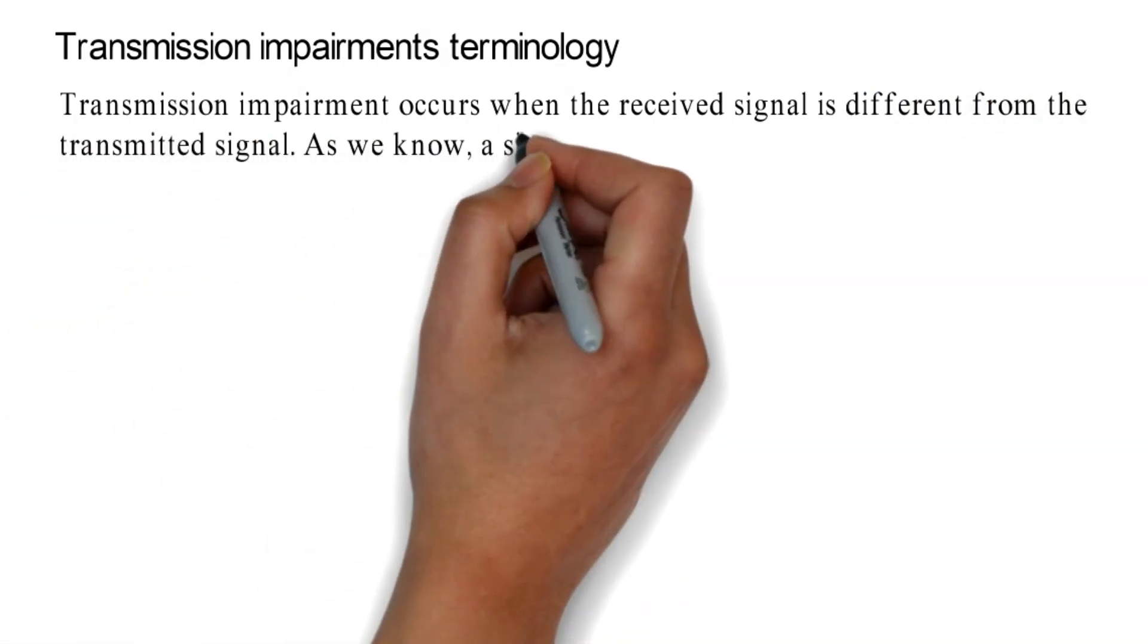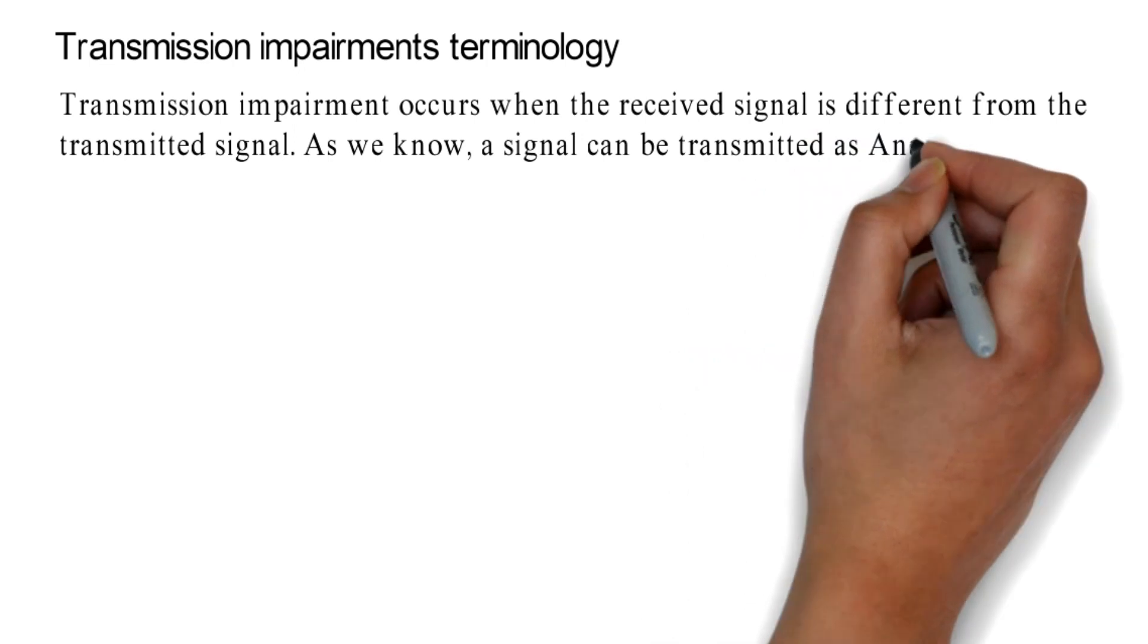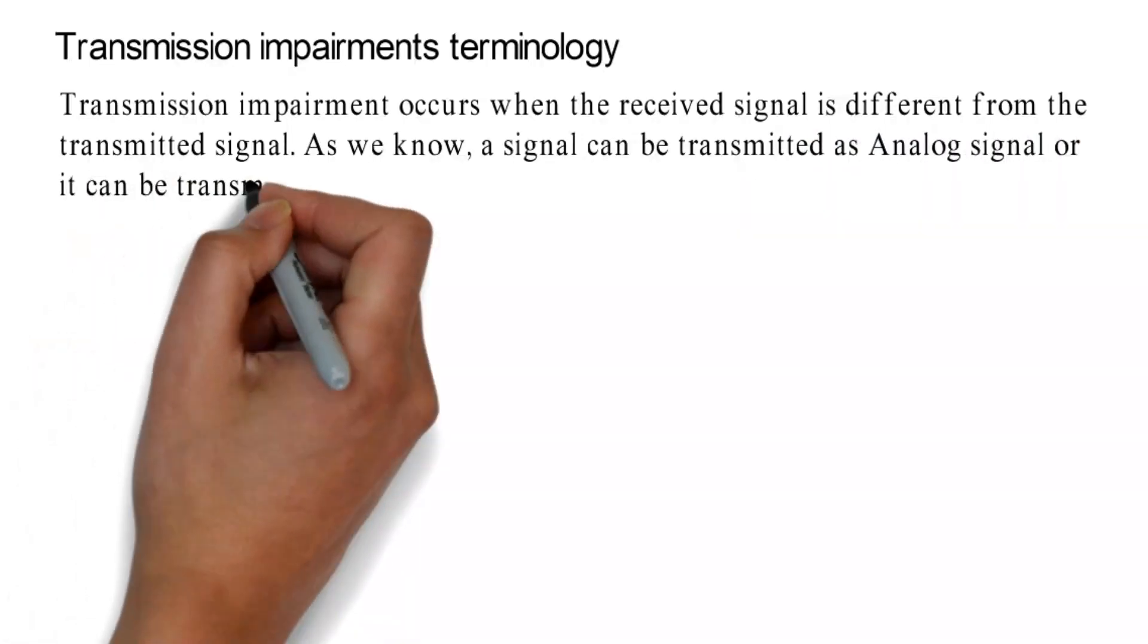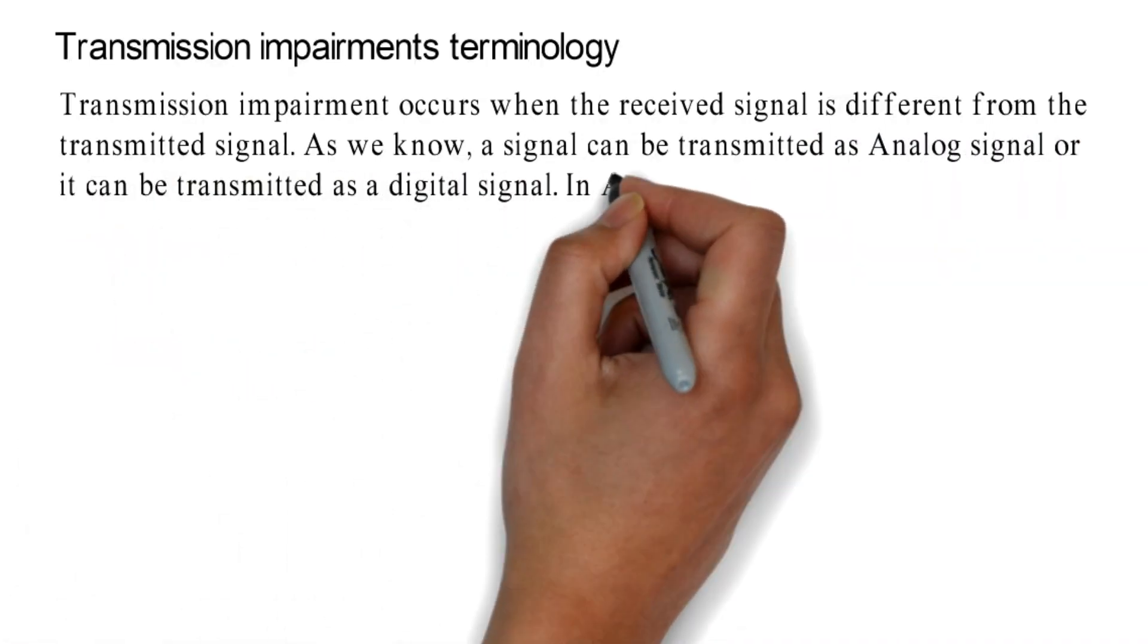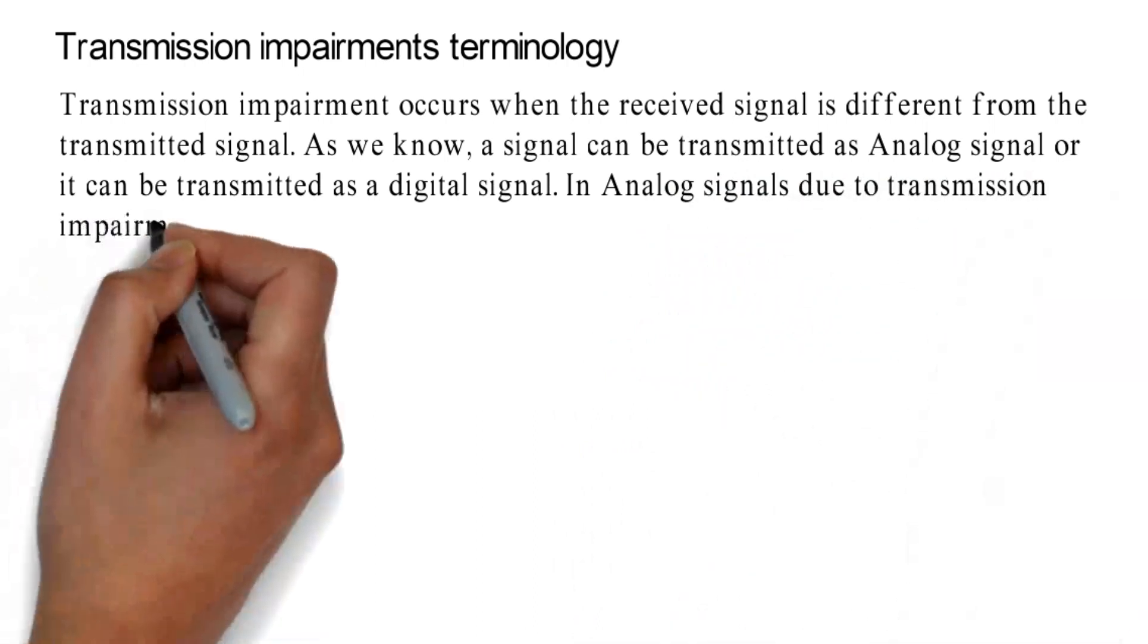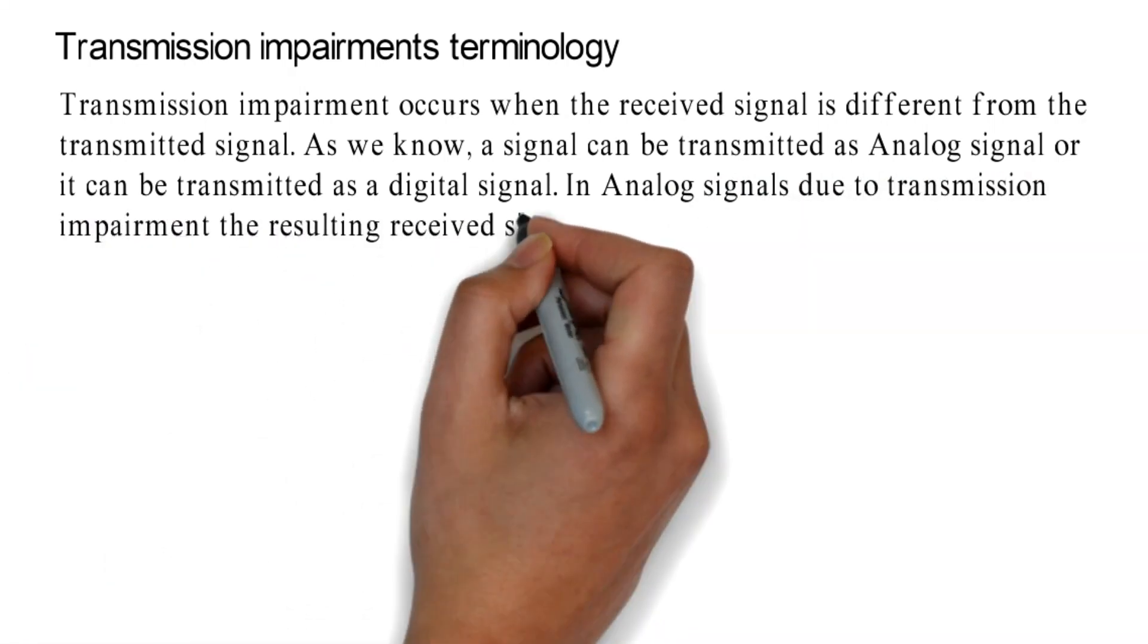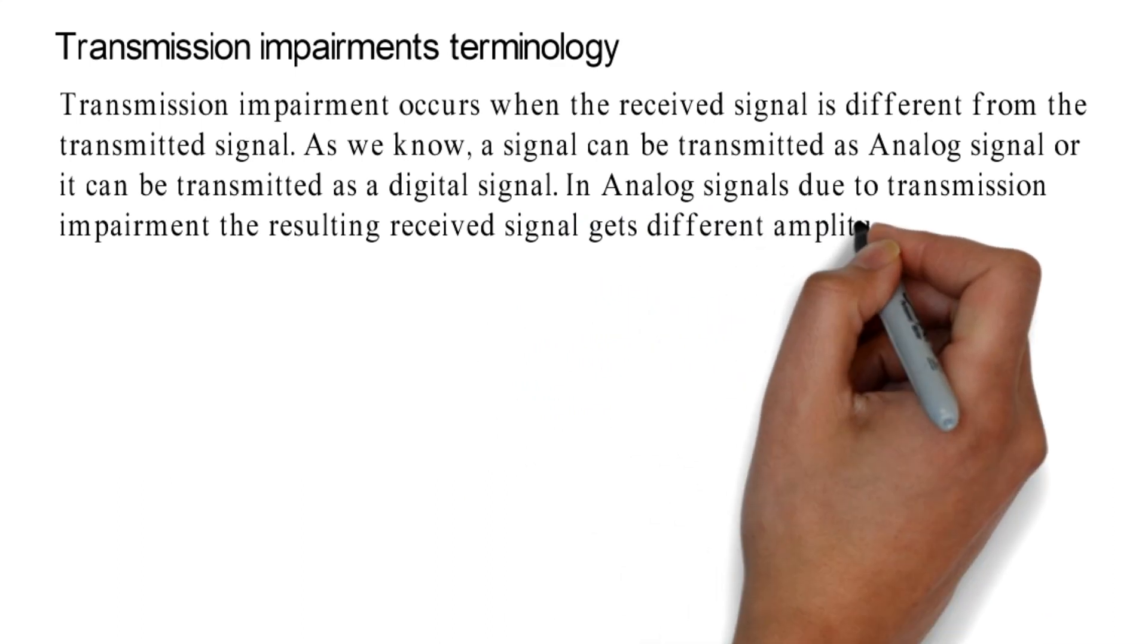As we know, a signal can be transmitted as analog signal or it can be transmitted as a digital signal. In analog signals, due to transmission impairment, the resulting received signal gets different amplitude or shape.